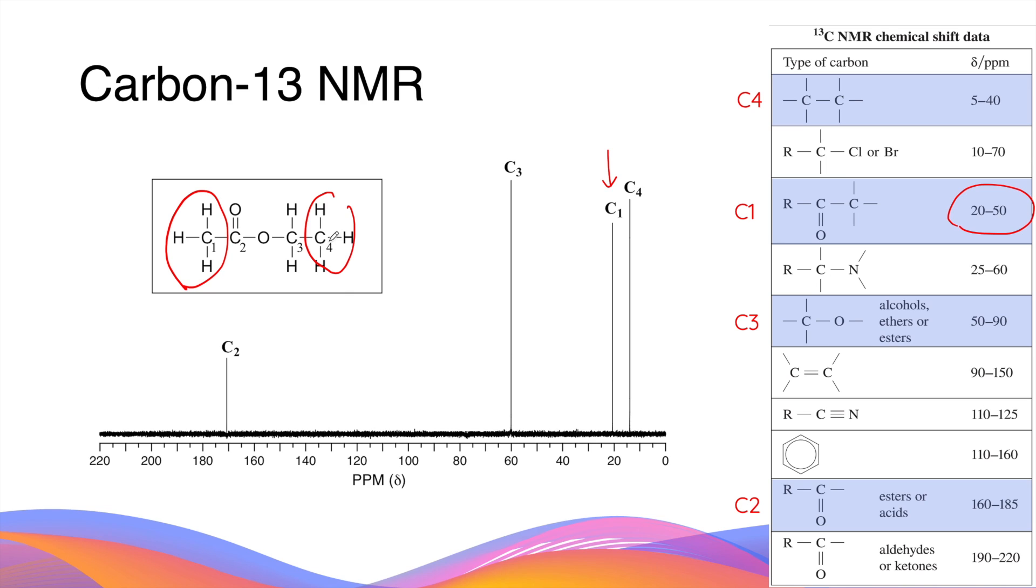Carbon-4 is connected to another carbon atom and this chemical shift is between 5 and 40 ppm. This is why carbon-4 and carbon-1 are very close together in terms of the chemical shift.